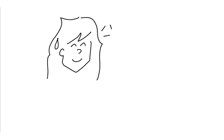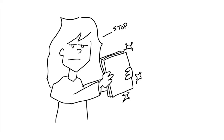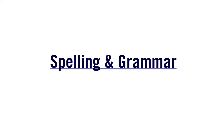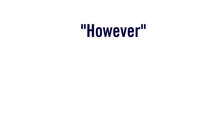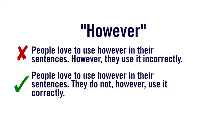Finally, once you have a functional assignment with formatting on point and strong arguments, what could drag you down? If anything, it'll be your spelling and grammar. There are common mistakes that unfortunately make students lose marks despite having a strong idea. For example, your use of the word 'however.' People love to use 'however' in their sentences; however, they use it incorrectly. The correct way would be: 'People like to use however in their sentences. They do not, however, use it correctly.'